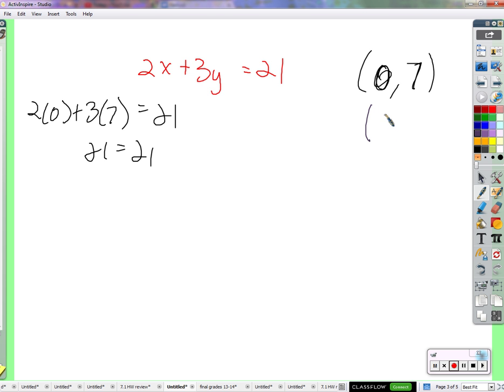x equals 3 and y equals 5. 3 and 5. Okay, let's see. 2 times 3 plus 3 times 5 needs to be 21. So, you have 6 plus 15, and we know that's 21. So yeah, that works too.